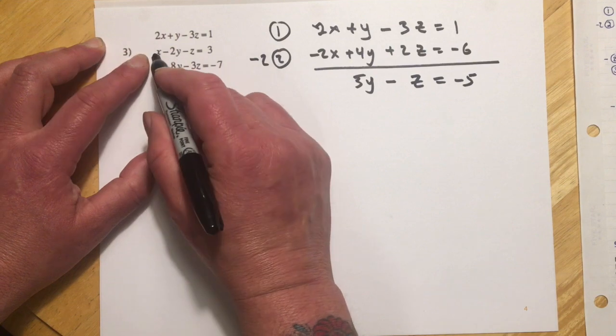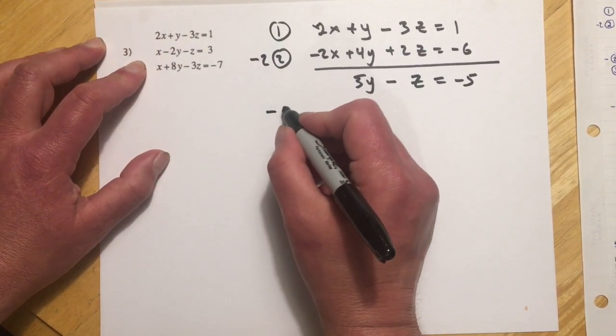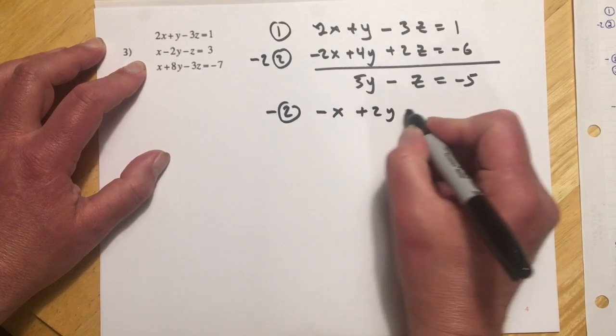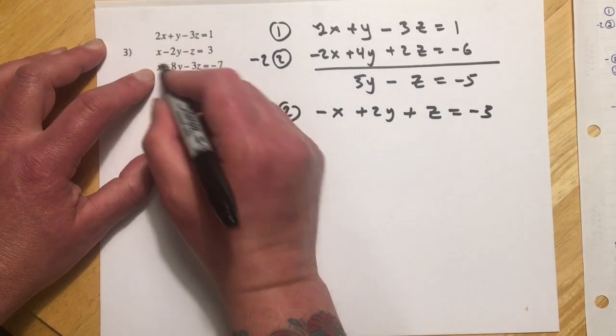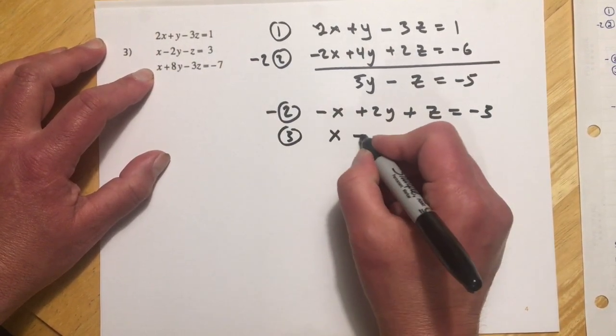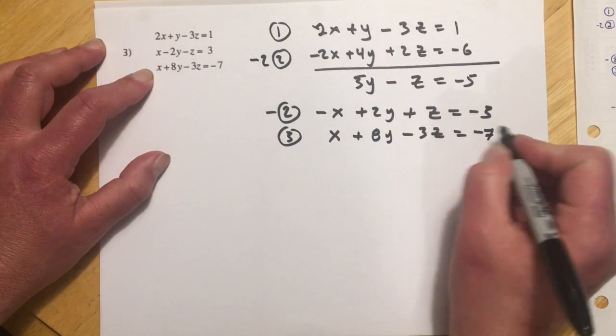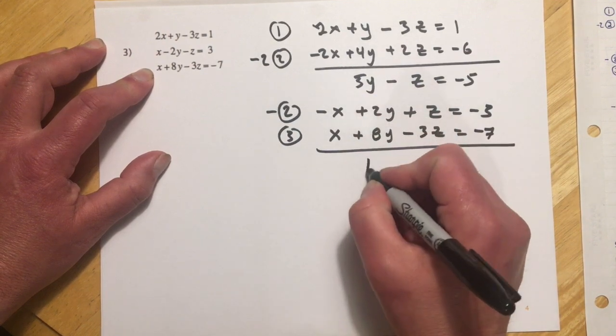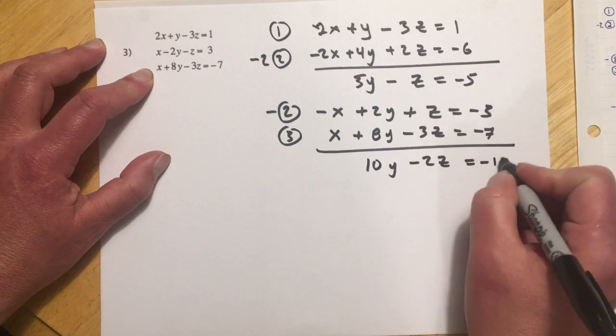Then I'll go the negative of equation two. So negative x plus 2y plus z equals negative 3. And I'll use that to eliminate this x here in equation three. So x plus 8y minus 3z makes negative 7. So x's drop out, 10y minus 2z equals negative 10.